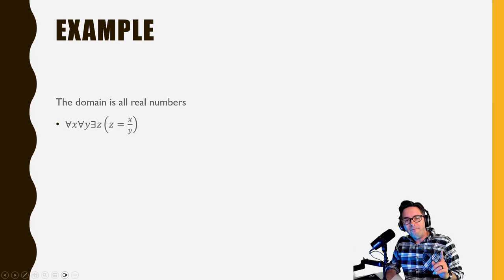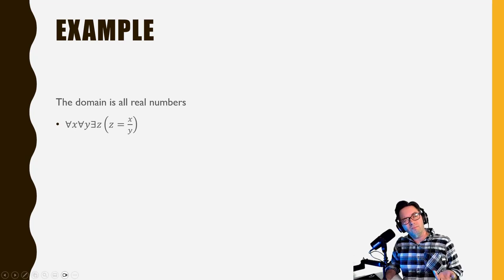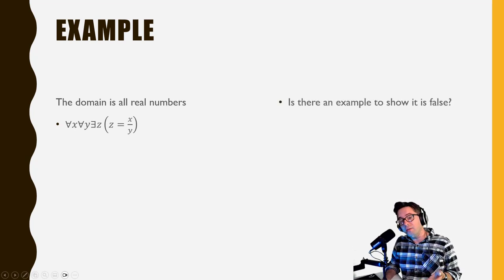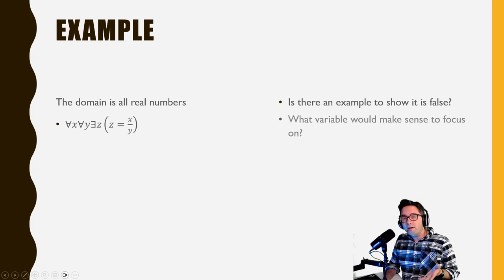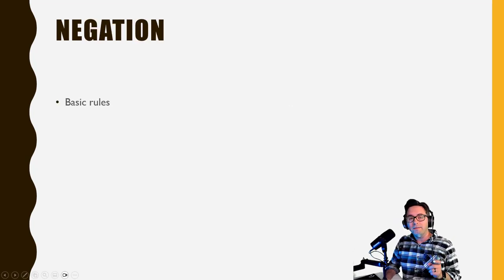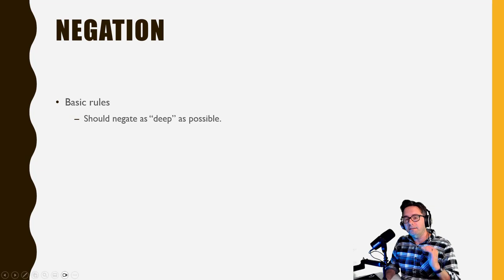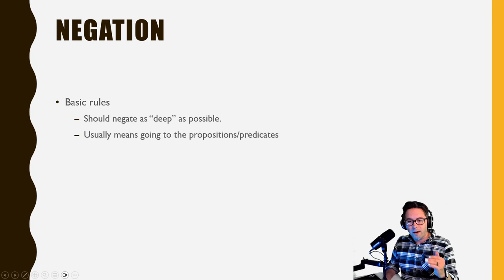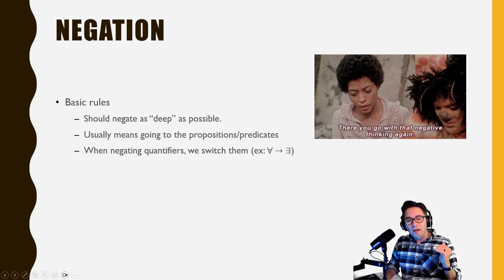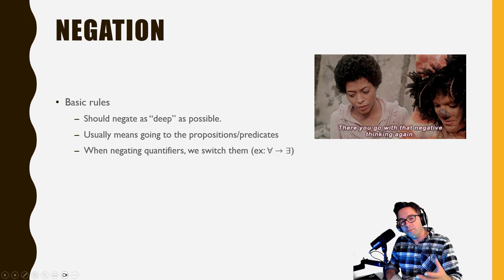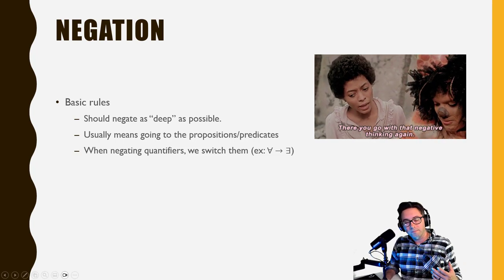Now think about this one: for every x and for every y, there is a z such that z = x / y. Is this true? Think about whether there's an example to show it's false — which variable would you focus on? We're also going to focus on negation. When negating, you want to go as deep as possible — into the propositions or predicates. This also means negating quantifiers: a universal becomes existential and an existential becomes universal.